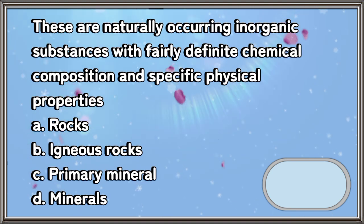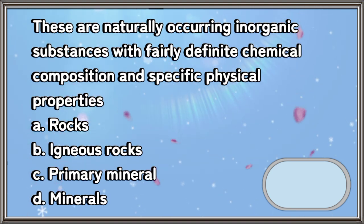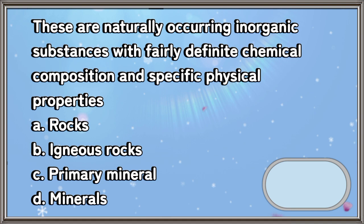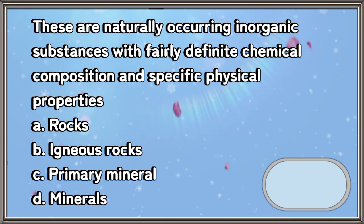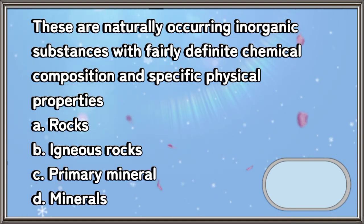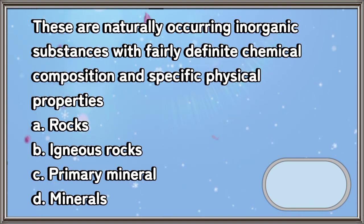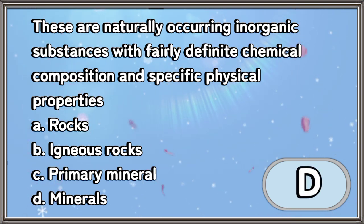These are naturally occurring inorganic substances with fairly definite chemical composition and specific physical properties. A. Rocks. B. Igneous rocks. C. Primary mineral. D. Minerals. The answer is letter D.